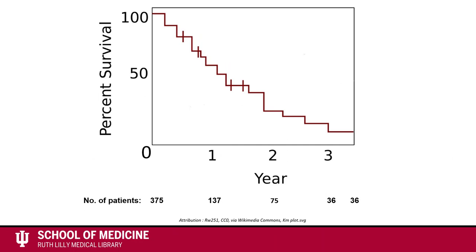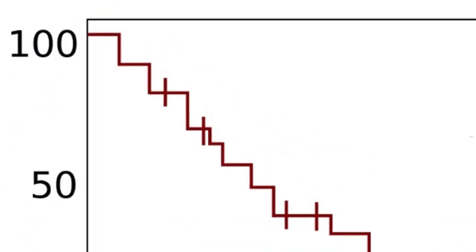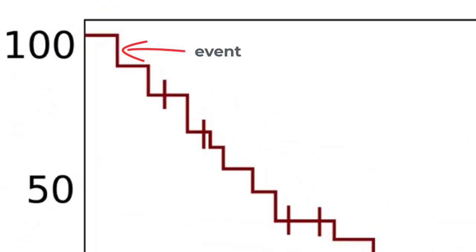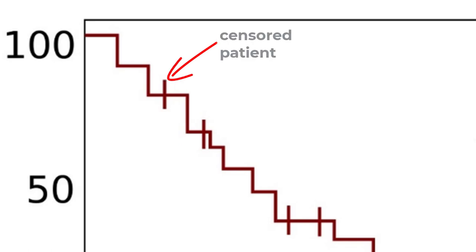This is a very basic survival curve, or Kaplan-Meier curve. On the x-axis, time is measured in years, and on the y-axis, survival is measured between 0 and 100%. Each step downward represents an event, often mortality. However, it can be other events, both positive and negative. The tick marks in the middle of some of the horizontal lines represent censored patients.